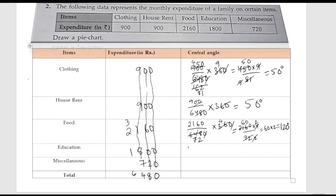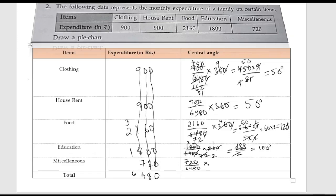Next let us write down 1800 divided by 6480 multiplied by 360. We cancel the zeros. Using the 9 table — 9 sevens are 648. Then 36 ones are 36, giving us 200 divided by 2. So 2 ones are 2, 100s are — this equals 100 degrees for education.